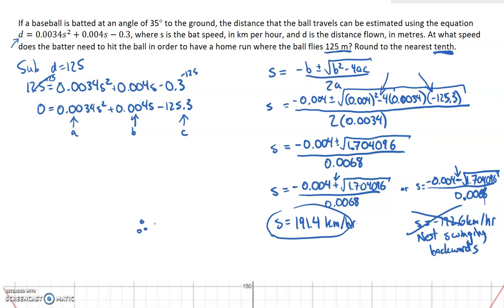And so we conclude for this question: Therefore, to hit a 125-meter-long home run, the bat speed must be 191.4 kilometers per hour.